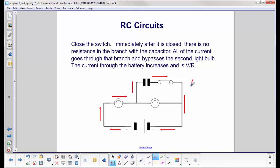So what happens to the current coming out of the battery when we close the switch? Well, current is Ohm's law, V over R. This light bulb is not in the circuit, so the only resistance we have here, current is V over R.